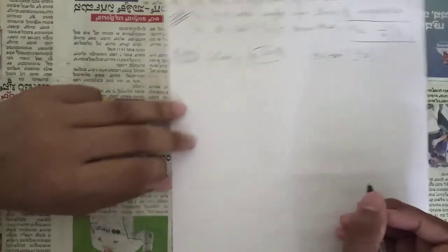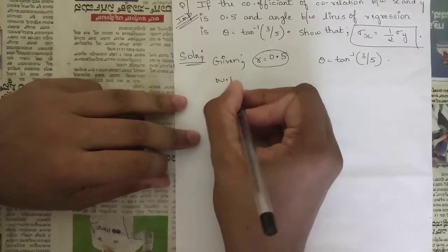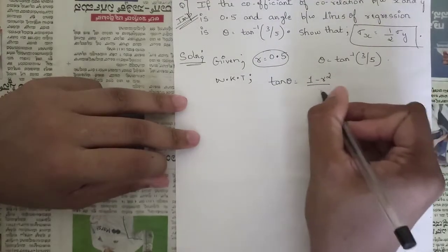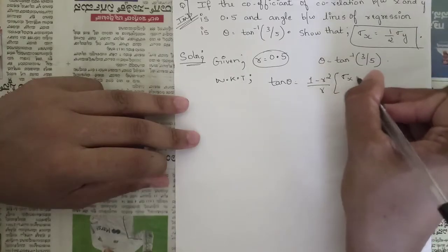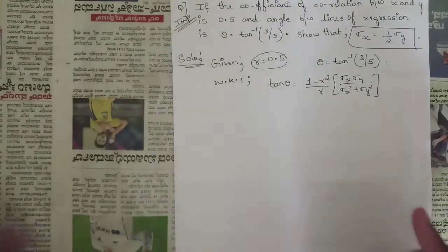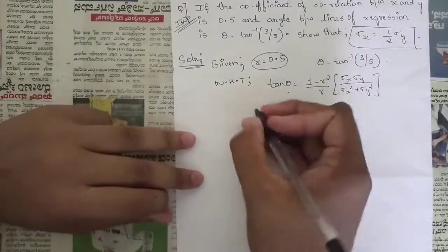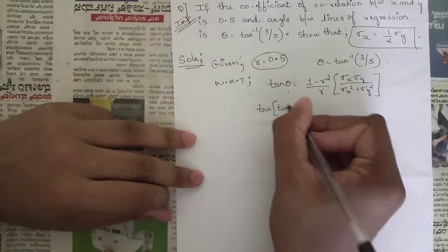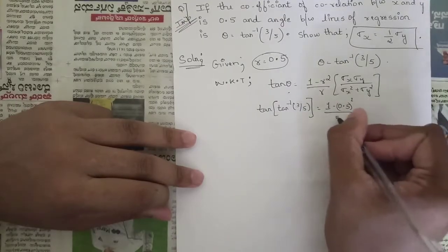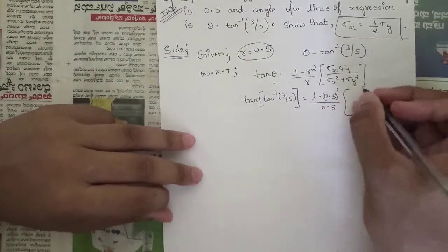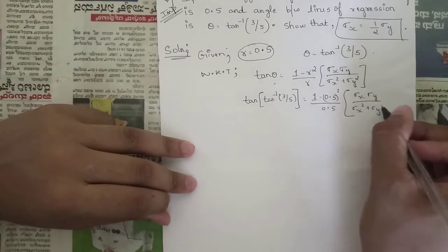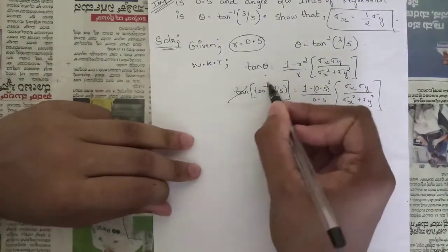This is a direct question. Apply the formula: the angle between regression lines is tan θ = (1 - r²) / r · (σx · σy) / (σx² + σy²). Now substitute the values: tan(tan⁻¹(3/5)) = (1 - 0.5²) / 0.5 · (σx · σy) / (σx² + σy²). We can see that tan and tan⁻¹ cancel each other.